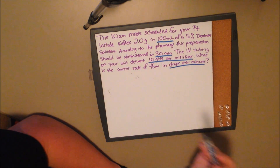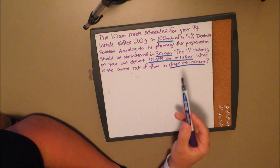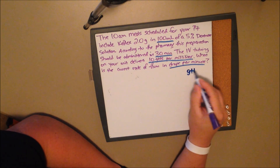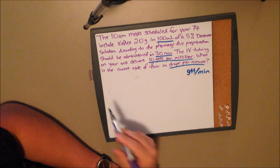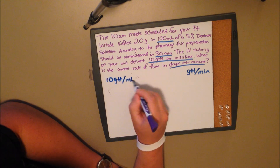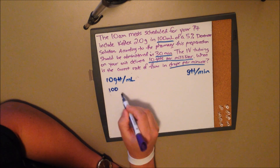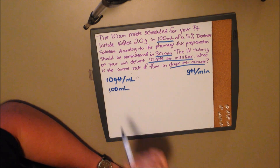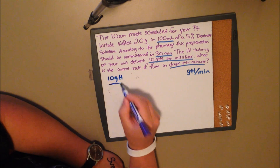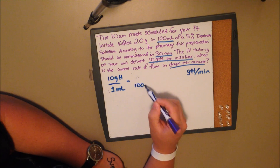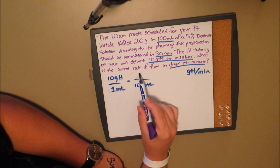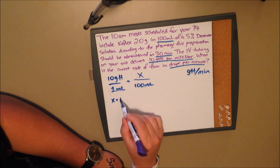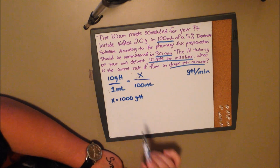Look at all this extra nonsense: 5% dextrose solution, Keflex 2 grams — who cares, right? Get to the bottom of it. The information we need is: tubing delivers 10 drops per milliliter, we have 100 milliliters, and we want drops per minute. If it's 10 drops for 1 milliliter, how many drops for the entire bag? Set it up: 10 drops per 1 milliliter, with 100 milliliters on the bottom. Cross multiply: X times 1 is X, and 10 times 100 is 1,000 total drops.